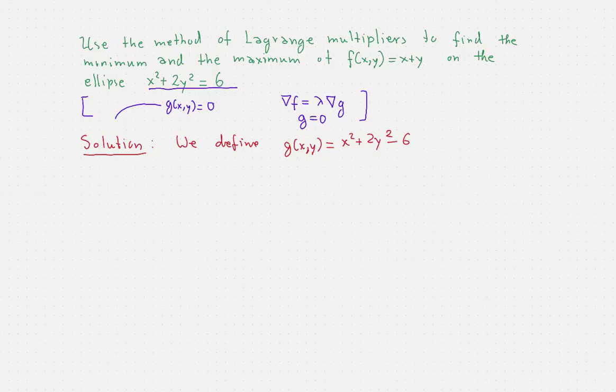Let's see how this translates. So the gradient of f is going to be 1, 1. And this is lambda times the gradient of g, which is 2x and 4y.